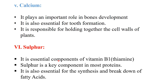Sulfur: it is an essential component of vitamin B1 (thiamine). Sulfur is a key component in most proteins, because many amino acids such as cysteine and methionine contain sulfur — this is how sulfur becomes part of proteins. It is also essential for the synthesis and breakdown of fatty acids.